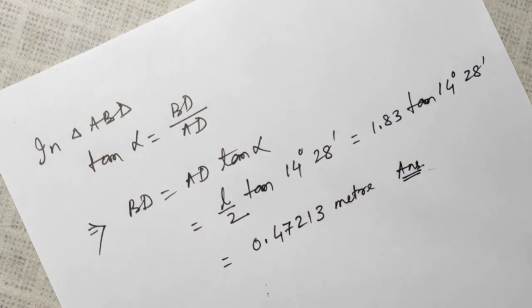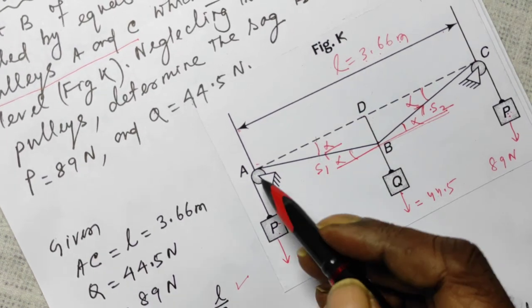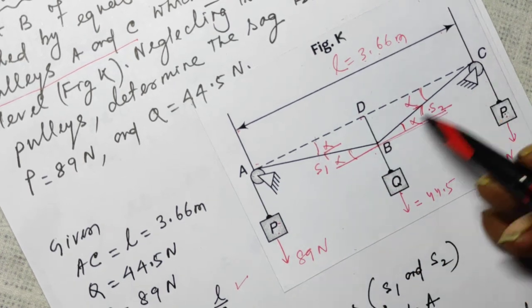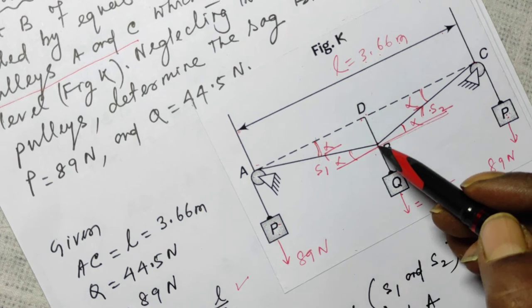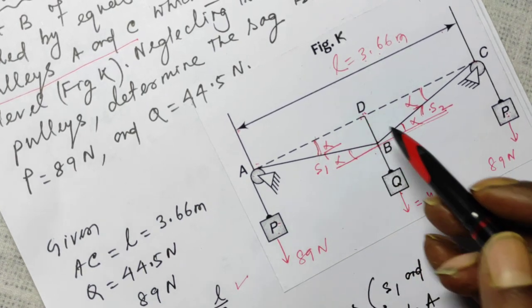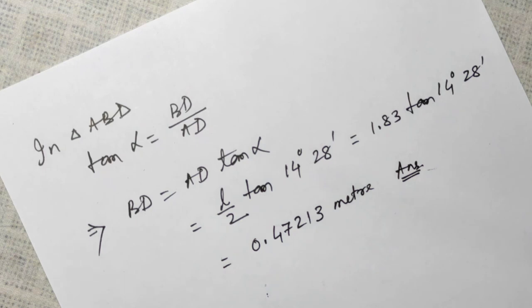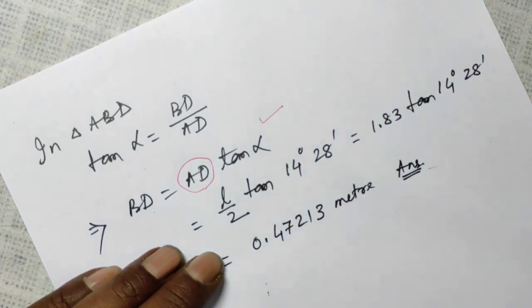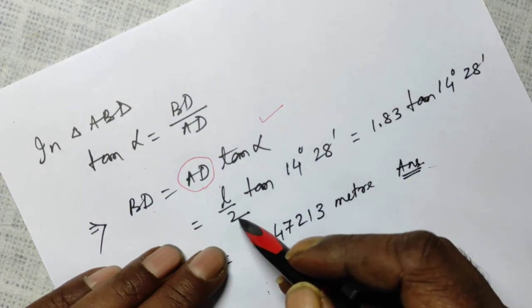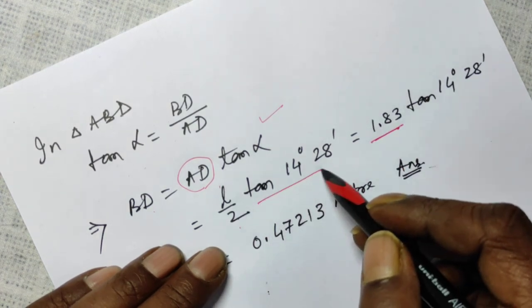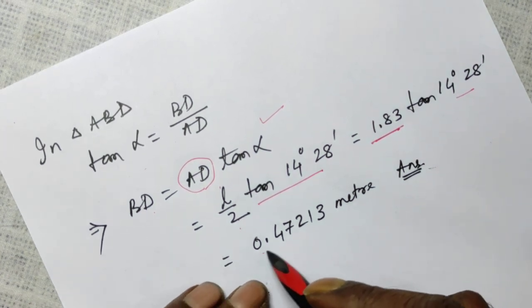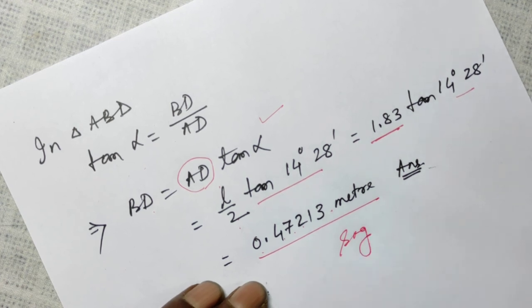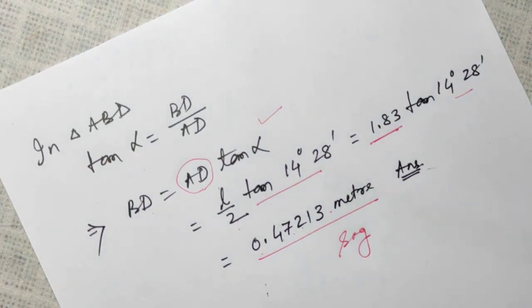Now look at the triangle ABD — you can also consider triangle CBD. tan(α) = BD / AD, so cross-multiplying: BD = AD × tan(α). AD was calculated as l/2 = 1.83 m since D is the midpoint of AC. Therefore BD = 1.83 × tan(14°28') = 0.4721 meters. This is the sag — the amount by which weight Q hangs down from the horizontal line AC.